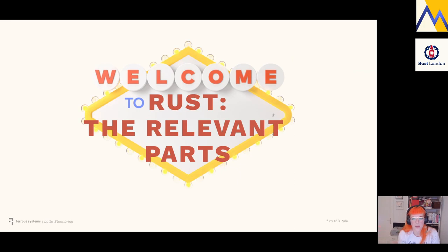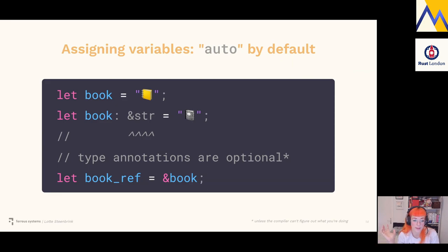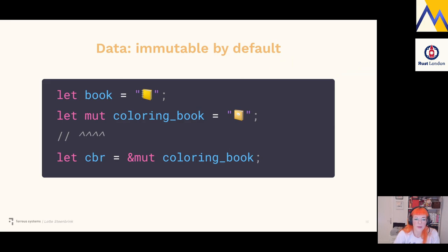First: variable assignment. You can think of it as `auto` by default — you don't have to write down the type because the compiler will usually figure it out. If we write `book` and assign a yellow book emoji as a string, it can tell this is a string slice. But we can also manually write down the type. We can also take references using an ampersand, and the type will be inferred there too.